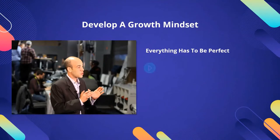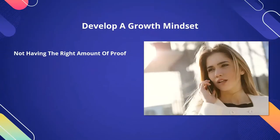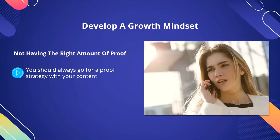Everything has to be perfect — this is another classic negative belief. Facebook marketers think that they have to create perfect content every time. Perfectionism is a real success killer. There is no such thing as perfect Facebook content. It is better to put content out there that is not quite perfect than to agonize over the perfect post. You will end up posting nothing with this belief. Just add regular posts and then use Facebook Insights to test your engagement levels. Not having the right amount of proof is another negative belief that will hold you back. You should always go for a proof strategy with your content. But if you only have one source of proof, then go with it anyway. A single source of proof will be enough to hook people into your Facebook content.